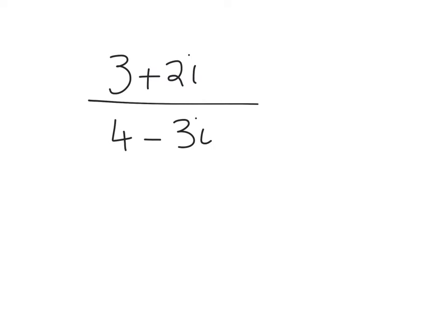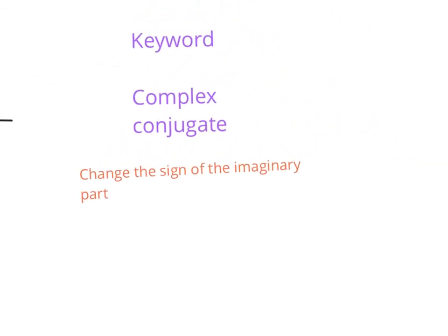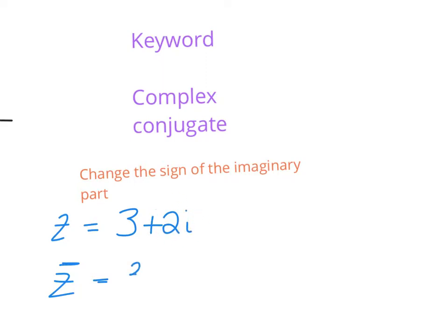One of the key parts of division here is our complex conjugate. We've met this before — when you're asked to find the complex conjugate of anything, the rule is that you change the sign of the imaginary part. So if z equals three plus two i, the complex conjugate of z, written as z with a stroke on top, would be three minus two i.